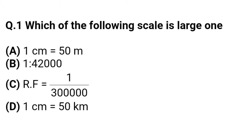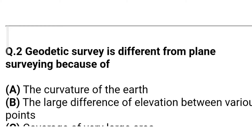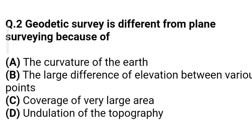Question 1: Which of the following scale is large? Option A: 1 cm = 50 meters. Option B: 1 is to 42,000. Option C: RF = 1/3,00,000. Option D: 1 cm = 50 kilometers. The correct answer is Option A — 1 centimeter equal to 50 meters.